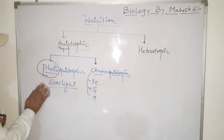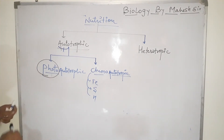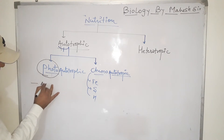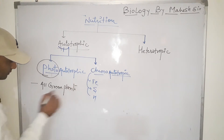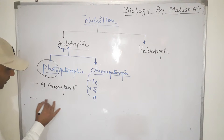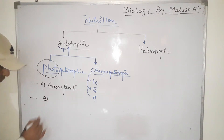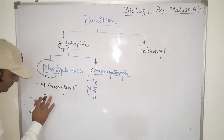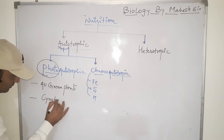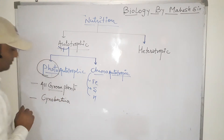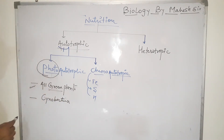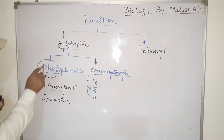The examples of photo-autotrophic nutrition include all green plants and blue-green algae, also called cyanobacteria. All green plants and cyanobacteria are called photo-autotrophs because they prepare food with the help of solar radiation.